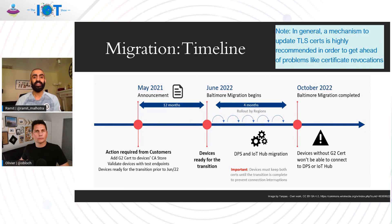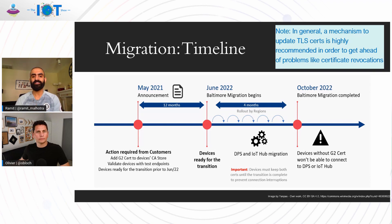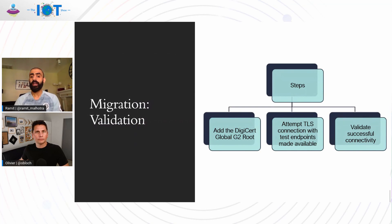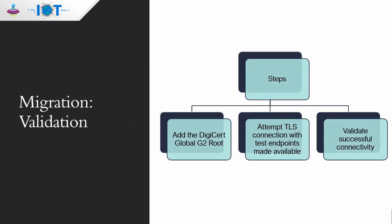IoT is a world where remote update is most essential. It is essential for all devices to get ahead of this problem so that in the event we have to change roots or have any change in the PKI, devices don't suffer and retain connectivity to Azure no matter what changes happen at the service side. Coming to your question — what are the go-dos? I would like to distill this to three things. First, please add the DigiCert Global G2 root. This needs to be added to all your devices. I've used the word 'add' because it's additive — we do not want to replace the Baltimore root, we want to add to it, especially for the transition period.